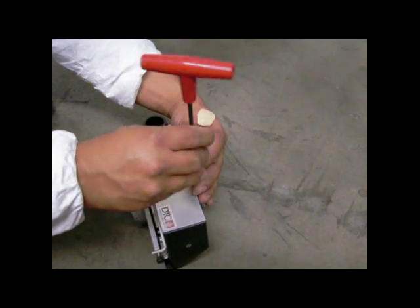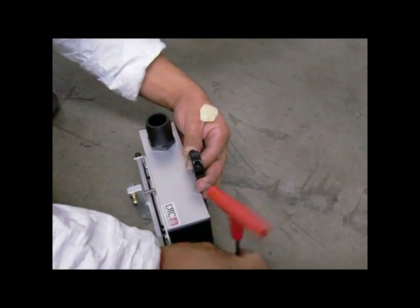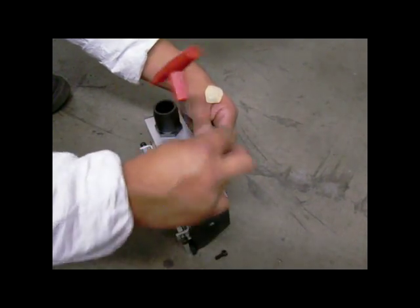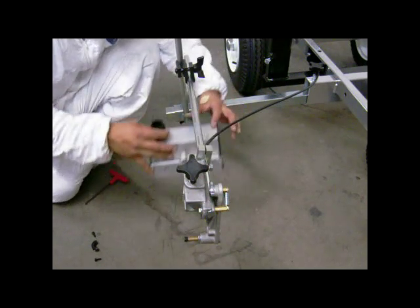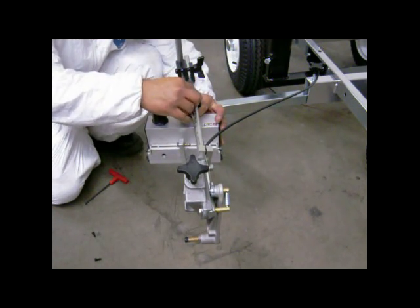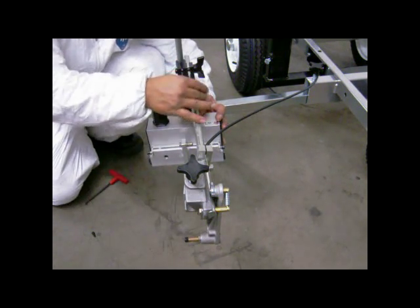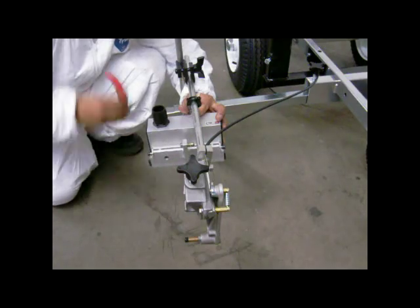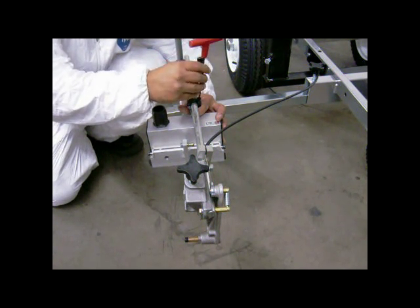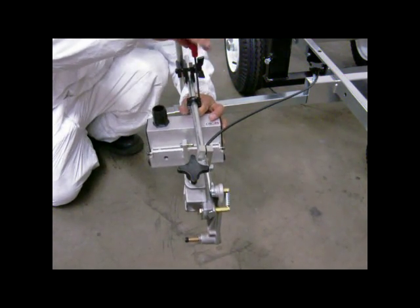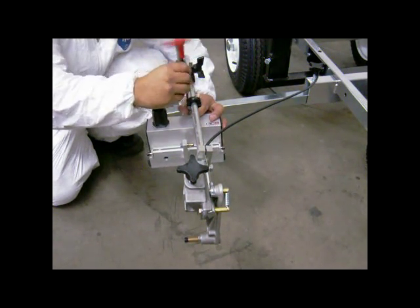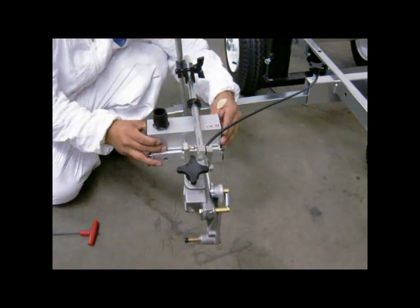Using an allen wrench, remove the socket head screws on the mounting bracket of the glass bead dispenser. Position the glass bead dispenser on the support arm approximately 6 inches behind the striping gun and snug the socket head screw a few turns to hold the bead dispenser in place. At this point, the bead dispenser should be able to slide up and down the support arm with ease.